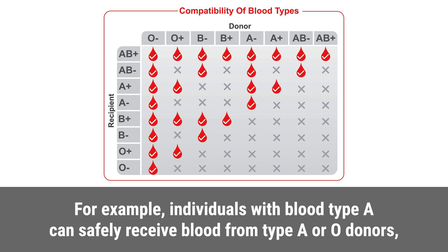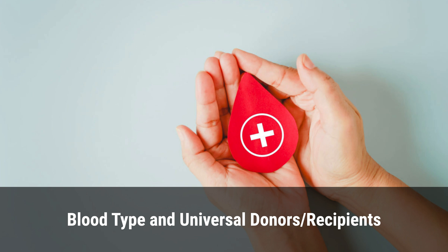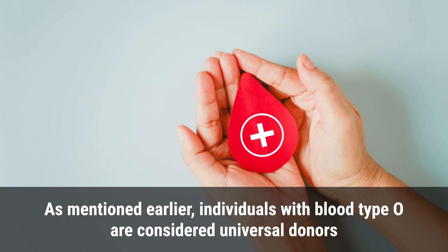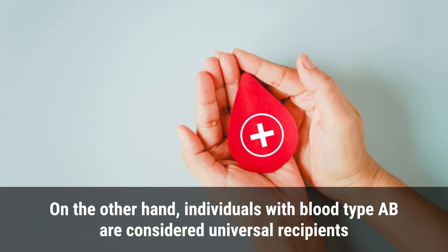Blood type O individuals are considered universal donors because their blood lacks A or B antigens, making it compatible with all blood types. On the other hand, individuals with blood type AB are considered universal recipients because they can receive blood from donors of any blood type.